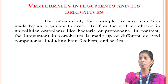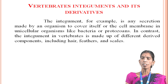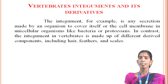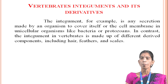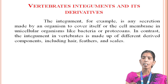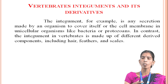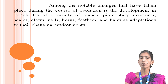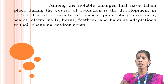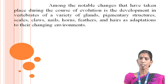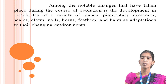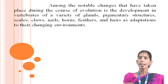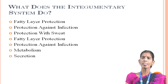Vertebrates: integument and its derivatives. The integument, for example, is any secretion made by an organism to cover itself, or the cell membrane in unicellular organisms like bacteria or protozoans. In contrast, the integument in vertebrates is made up of different derived components including hair, feathers and scales. Among the notable changes that have taken place during the course of evolution is the development in vertebrates of a variety of integumentary structures: scales, claws, nails, horns, feathers and hair, as adaptations to their changing environment.